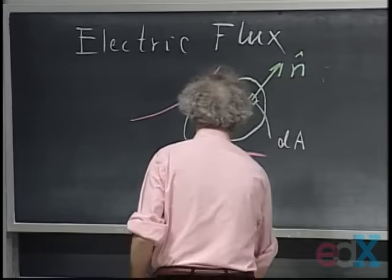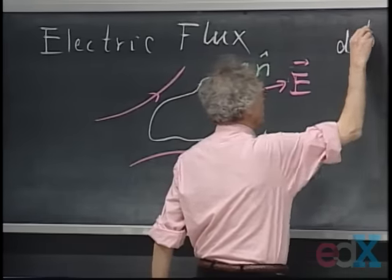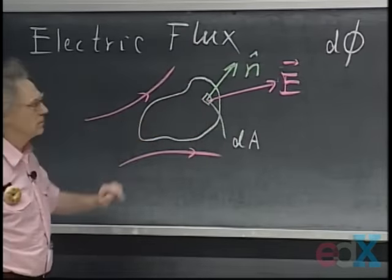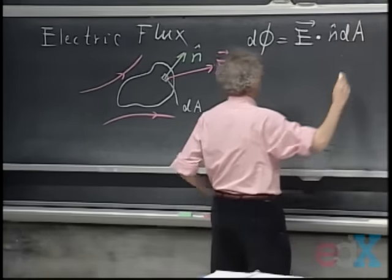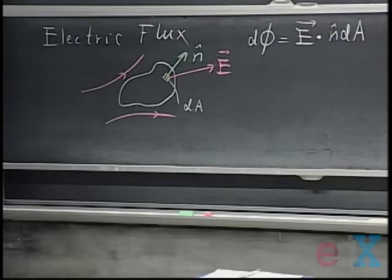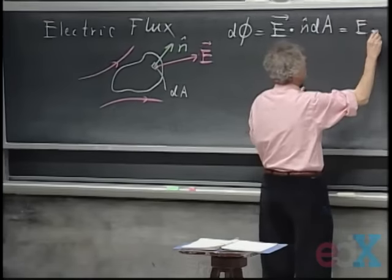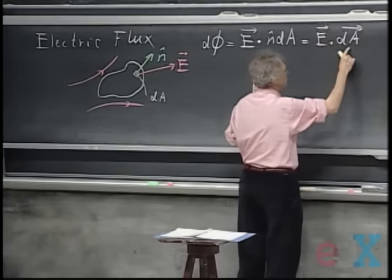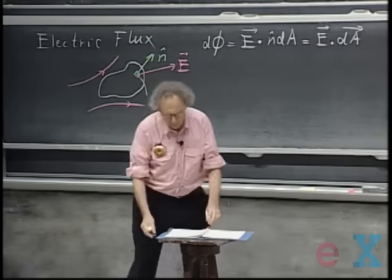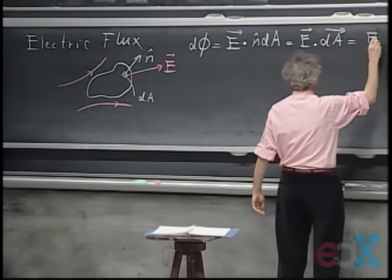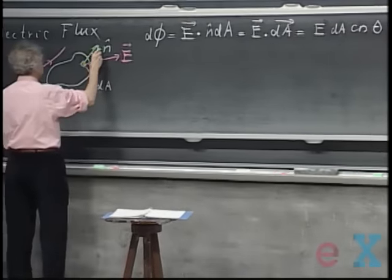The local electric field at that location would be, for instance, this vector. The electric flux dΦ that goes through this little surface is defined as the dot product of E and the vector perpendicular to this element, which has magnitude dA. Our book will always write for N-hat dA simply dA, so I will do that also, although I don't like it, but I will follow the notation of the book. This vector dA is always perpendicular to that little element and has magnitude dA. Since it is a dot product, it is the magnitude of E times the area dA times the cosine of the angle between these two vectors, theta. And this is a scalar.